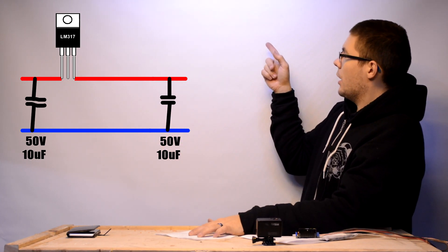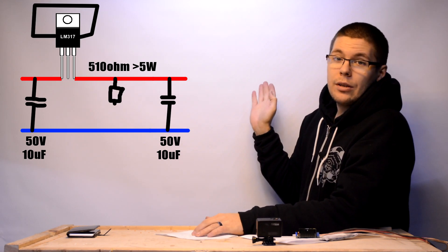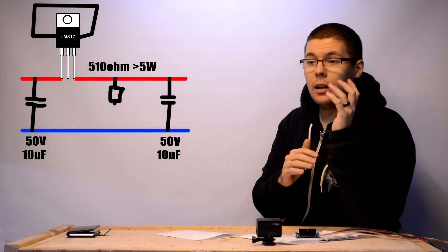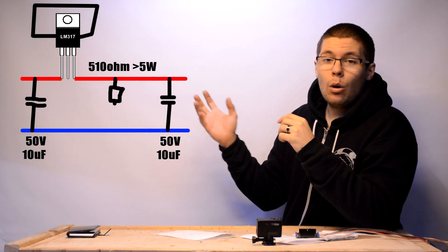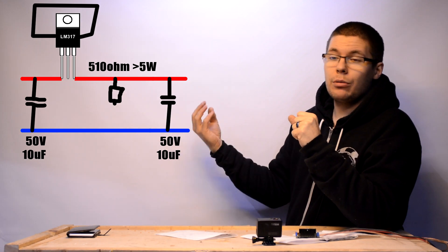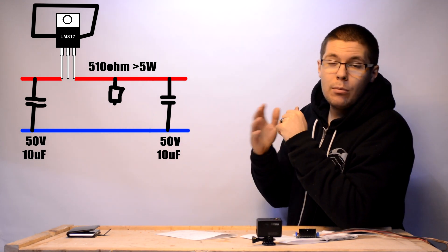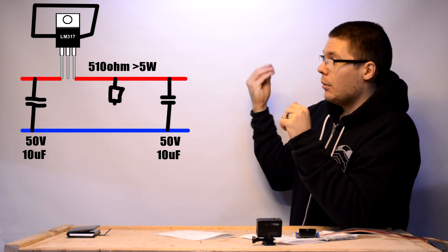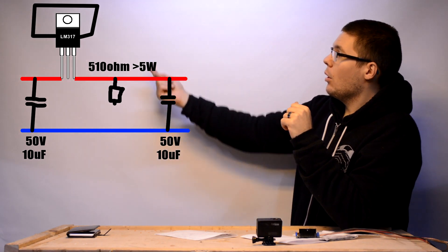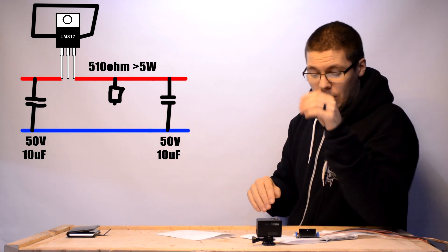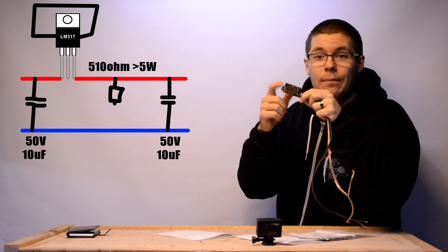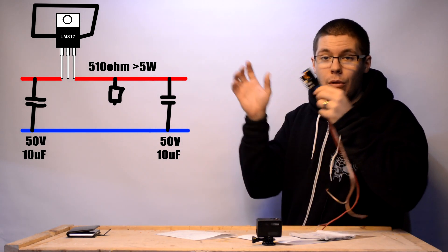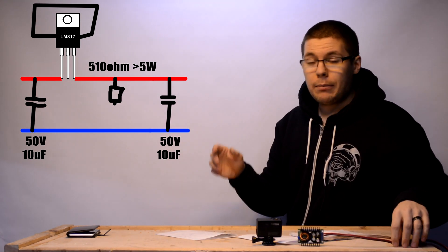And in the output side you put 510 ohm resistor. The wattage of the resistor might be 3 or 5 watts. It all depends how much you are trying to draw current through the system. The more current you take, the higher the voltage is, the more current you try to take out, the more the LM317 heats up. So you must use a heatsink to cool it down properly. Using a heatsink is a very good thing in here. Otherwise you might burn it up.